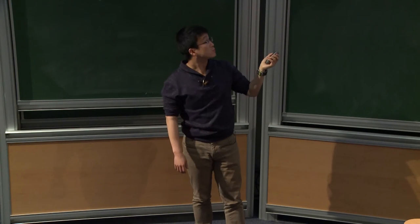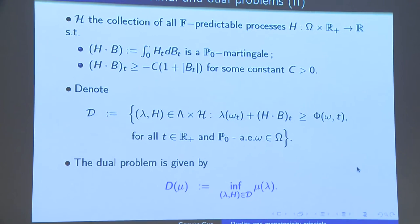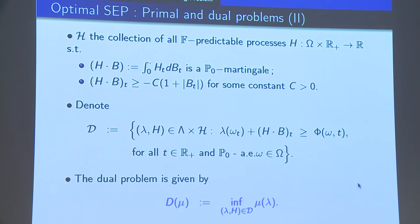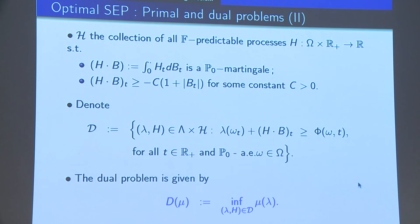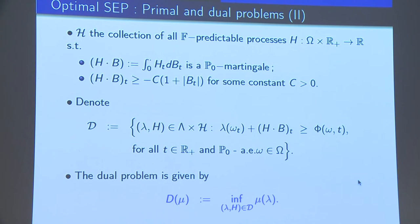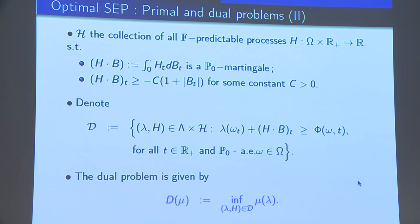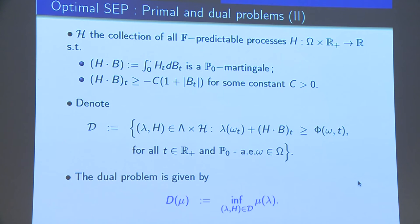So, let Lambda be the space of continuous functions defined on R with linear growth, and let F^B be the natural filtration of the Brownian motion B, and P_0 be the Wiener measure. So, the dual problem is defined as following. Let H be the collection of some suitable process, such that we may define this stochastic integral. So, we require some technical conditions for this H, such that it is ensured to be a supermartingale. So, define D by the couple (lambda, H), such that this inequality holds P_0 almost surely for all omega in the space Omega. And then the dual problem is defined as the minimum of the integral of lambda with respect to mu for all (lambda, H) belonging to this set D.